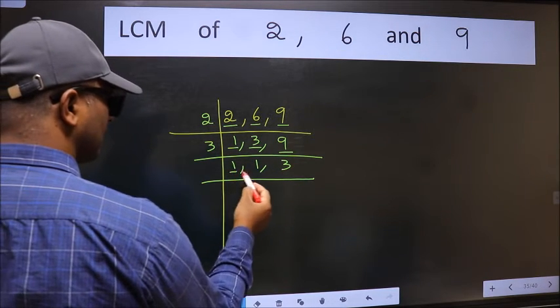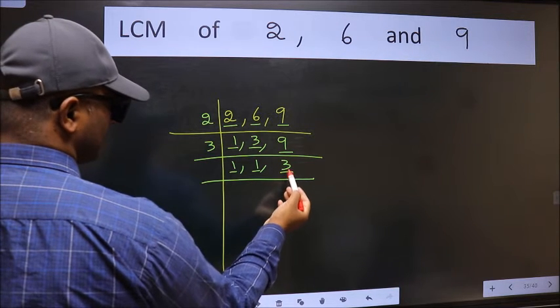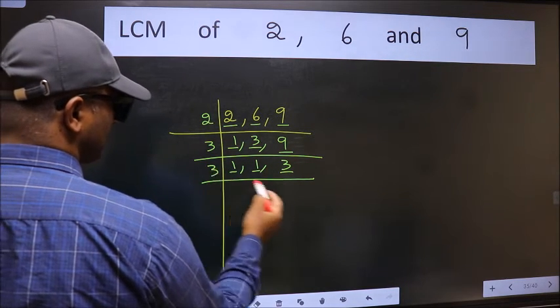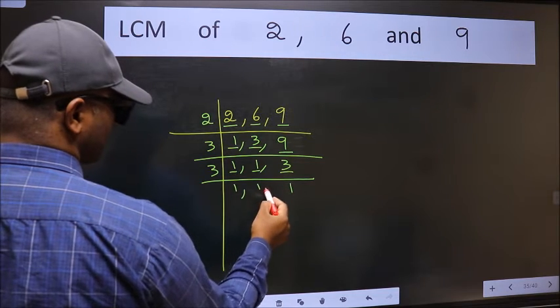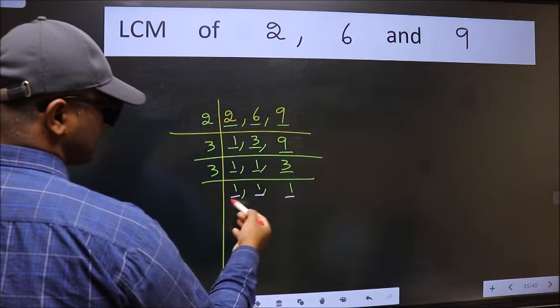Now we got 1 here and here. So focus on the next number 3. 3 is a prime number, so 3 divides 3. So we got 1 in all the 3 places.